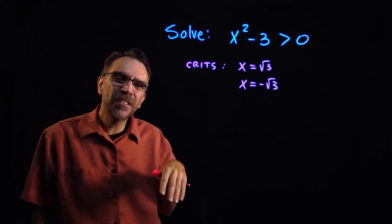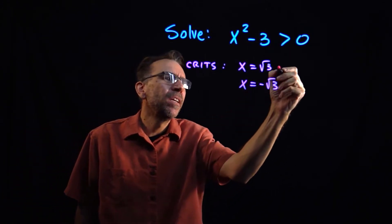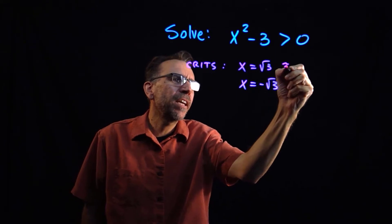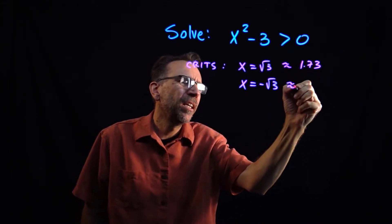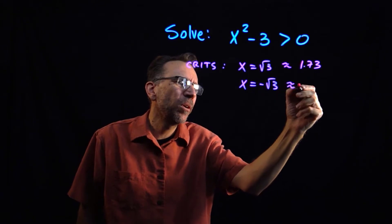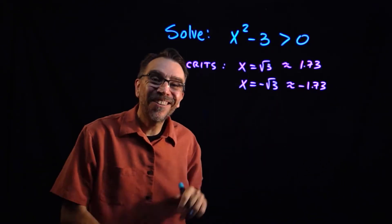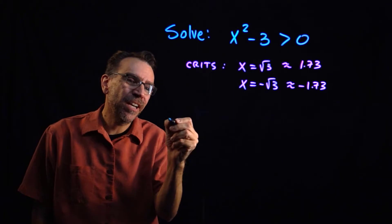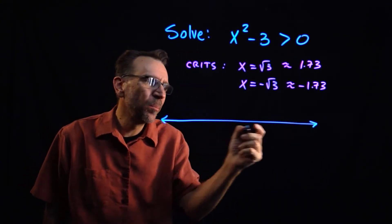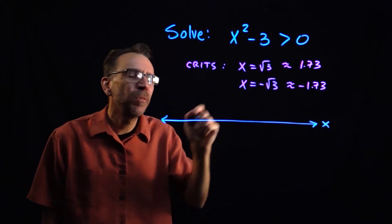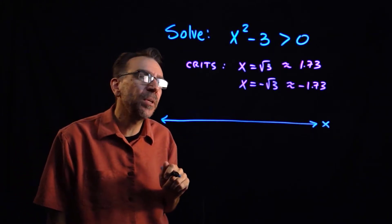Now that I have my critical numbers, I need to know where to put them on a number line. On a calculator, square root of 3 is approximately 1.73, and negative square root of 3 is approximately negative 1.73. Next, we make a sign chart, which is just a number line — the x-axis with those critical numbers breaking it up into regions.